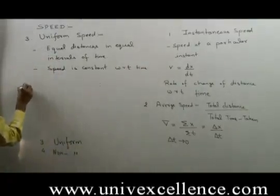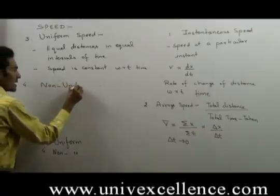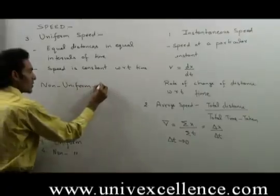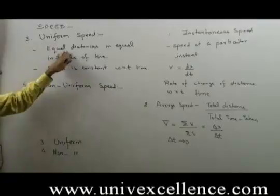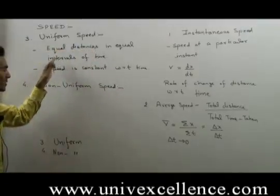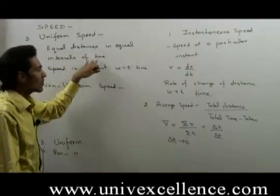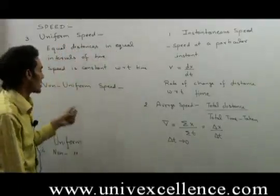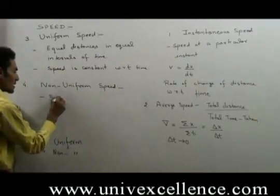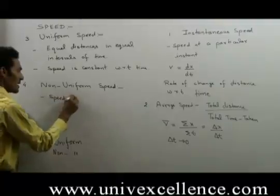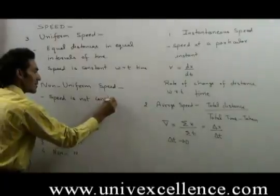Non-uniform speed means speed is changing with respect to time. In non-uniform speed, an object covers equal distances in unequal intervals of time, or we can say unequal distances in equal intervals of time. So in non-uniform speed, the speed of the object keeps on changing — that is, speed is not constant; it changes with time.